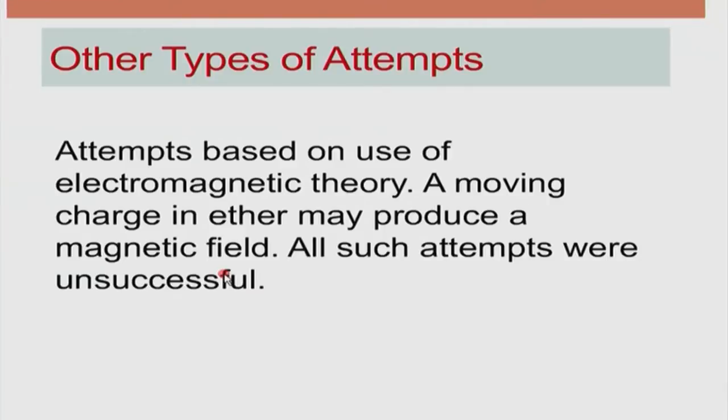There were also other series of experiments based on electromagnetic theory. For example, if earth is moving through ether, then even a stationary charge on earth is actually moving in ether, so it should experience a magnetic force (F = qv × B) due to that motion. Applying a magnetic field to a stationary charge should produce a force if the ether hypothesis is correct. None of these experiments were found successful either.